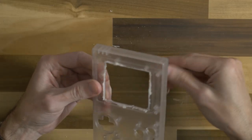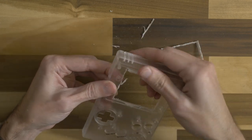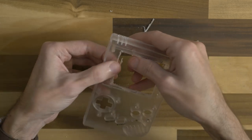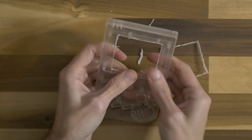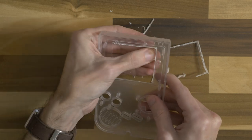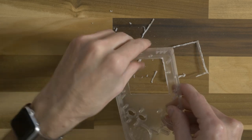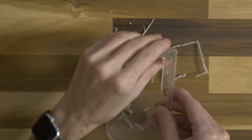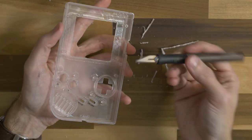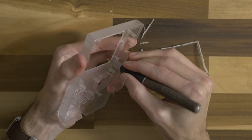Okay, so that's pretty much all the dremeling we need to do. And then just clean up the inside here. I'm just going to break it off with my fingers first. Okay. And then I'm just going to use an X-Acto blade here to clean up the rest.